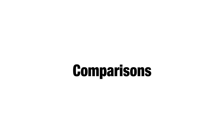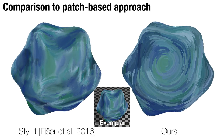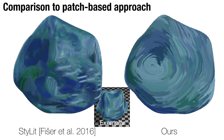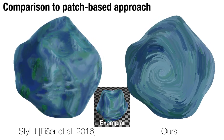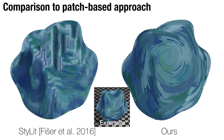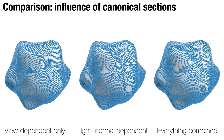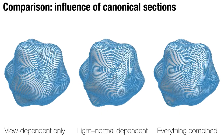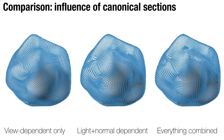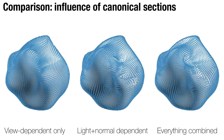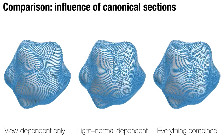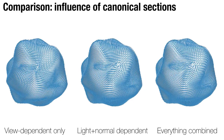We evaluate our method step by step. The state-of-the-art patch-based approach tends to produce patch orientation drift, causing temporal artifacts on stroke animation. Even with optimization for patch consistency, maintaining coherent orientation motions is difficult in the image space. Our method offers much better temporal stability while still retaining the expressive stroke styles. When we only use the view-dependent canonical sections for learning and transfer, the resulting orientations are stable but too boring. With only light and normal-dependent canonical sections, the resulting orientations can become unstable when lighting conditions or normals vary significantly. The combination of these canonical sections together leads to stable yet lively motion in the orientations.